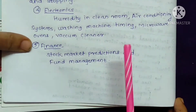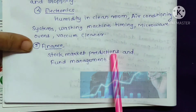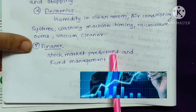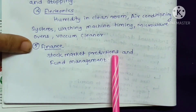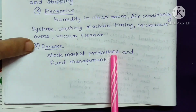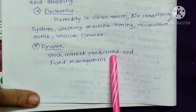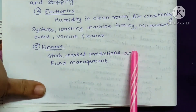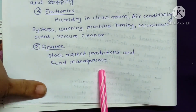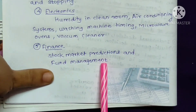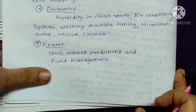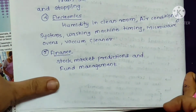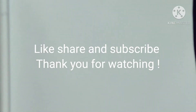In finance, stock market predictions can be done with the help of a fuzzy logic system. Since the stock market is very unpredictable and predictions are difficult, multiple patterns can be generated and analyzed based on fuzzy logic. Fund management is also an important area of finance that can be handled with the help of fuzzy logic. These are the applications of the fuzzy logic system.